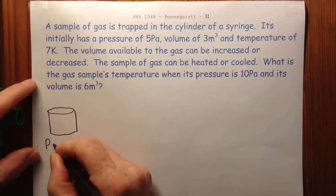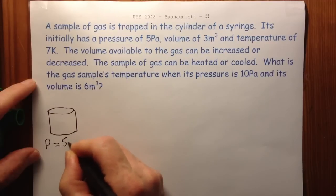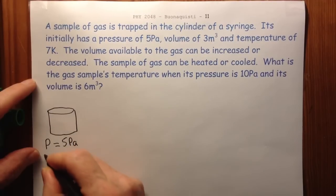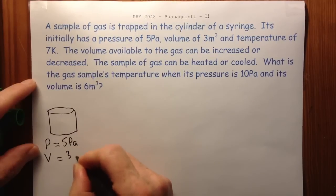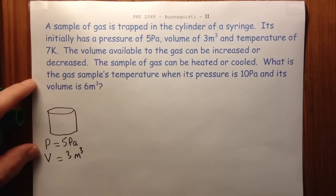The initial pressure is equal to 5 Pascal. The initial volume is equal to 3 cubic meters. And the initial temperature is equal to 7 Kelvin.